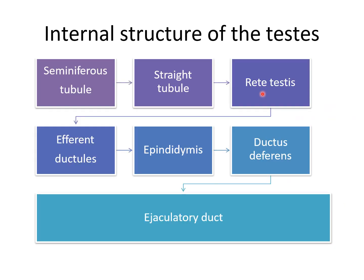About the internal structure of the testis: it consists of the seminiferous tubule, straight tubule, rete testis, efferent tubules, epididymis, ductus deferens, and ejaculatory duct. The seminiferous tubule continues to the straight tubule, straight tubule to rete testis, rete testis to efferent ductules, which continues as epididymis, then ductus deferens and ejaculatory duct — that is the continuous passage for the flow of spermatozoa produced in the seminiferous tubule.